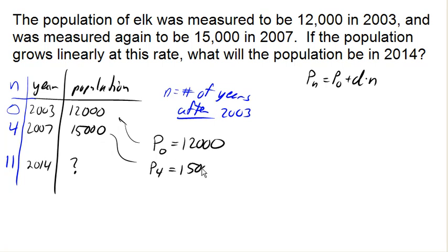Now, one of the problems we're running into here is that we don't know what the common difference is right off the bat. So we need to figure out how much the population was growing by each year. So we can say here that the population increased by how much? Well, it increased by the difference between 15,000 and 12,000, or in other words, it increased by 3,000.